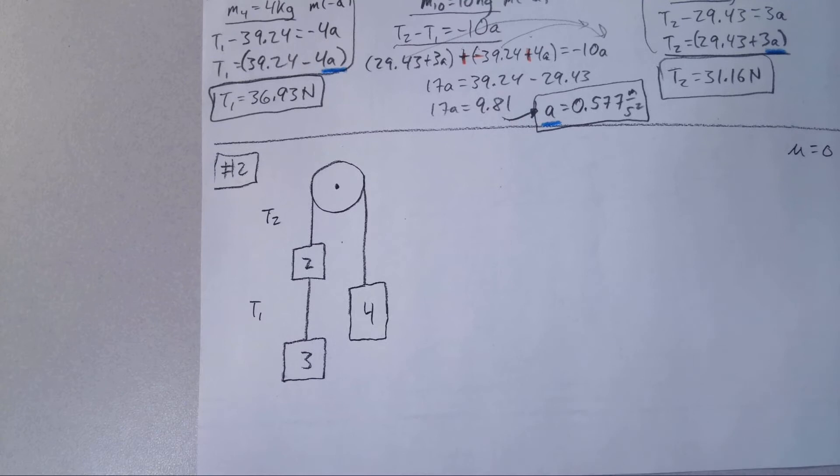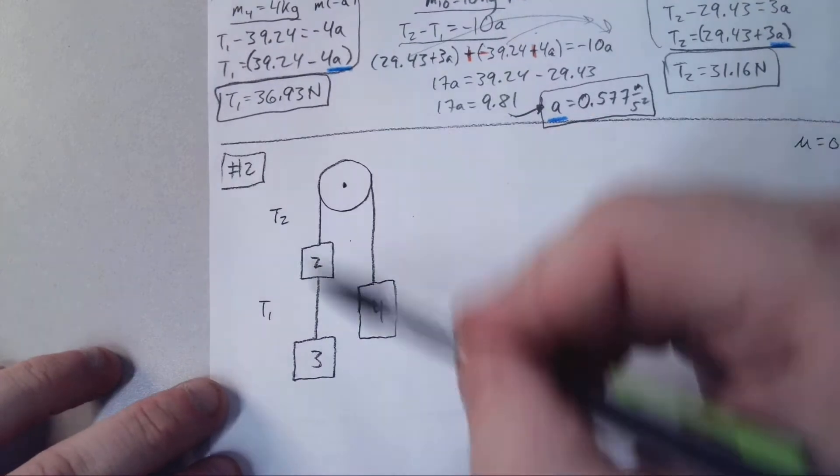We're now going to look at a pulley problem. It's not our first pulley problem, but it is our first where we have a mass suspended from another mass. The first thing we need to figure out is which way this pulley system is going to rotate.